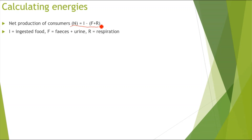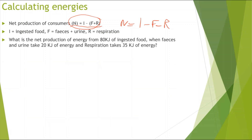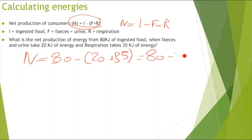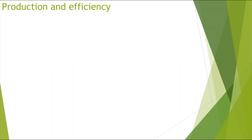Be careful: N = I − (F + R) is not the same as N = I − F + R. The brackets mean it can also be written as N = I − F − R — we are still subtracting respiration. For example: if ingested food = 80 kJ, feces and urine = 20 kJ, and respiration = 35 kJ, then N = 80 − (20 + 35) = 80 − 55 = 25 kilojoules of energy available.